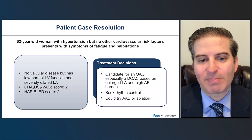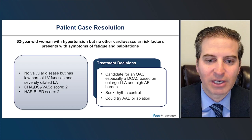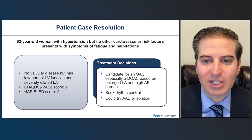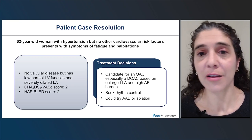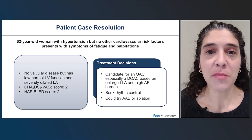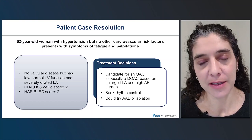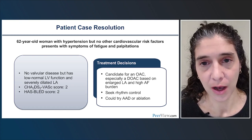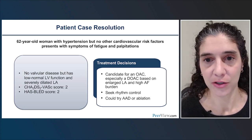Back to this patient with a CHADS-VASc score of two, a severely dilated left atrium, and a HAS-BLED score of two — what would you recommend? We'd need to elicit the patient's values and preferences, but assuming it were entirely up to us, I would probably recommend chronic anticoagulation for this patient. I would also refer her for a strategy to restore and maintain rhythm control, expecting significant long-term benefits from that approach.